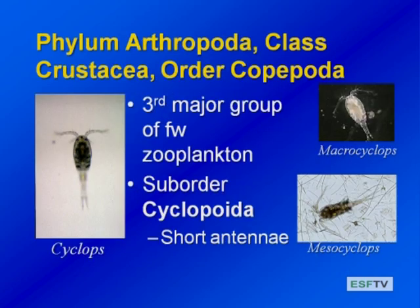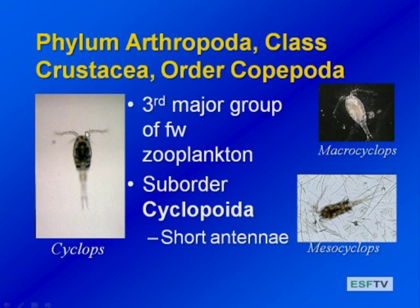Our third major group of freshwater zooplankton is the copepods — arthropods in the class Crustacea, in their own order, Copepoda. There are two different suborders we'll discuss primarily. First, the cyclopoids or suborder Cyclopoida — you can generally tell these because they have short antennae and tend to have an eye spot. We're looking at a dorsal view here; they're like tiny shrimp-like organisms. And we have calanoids from the suborder Calanoida, which have longer antennae and a slightly different body shape.